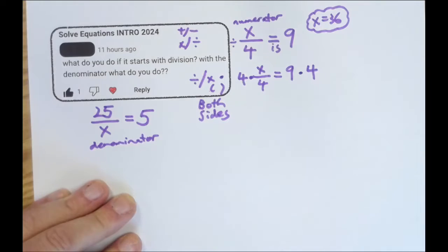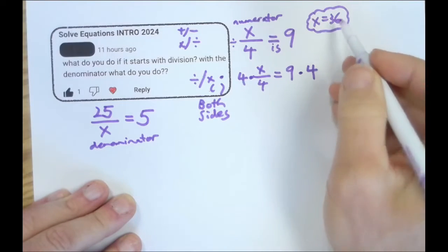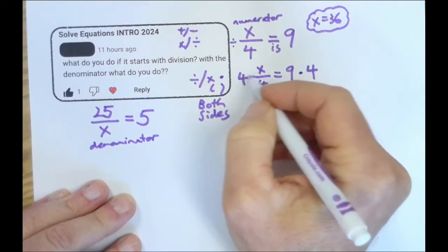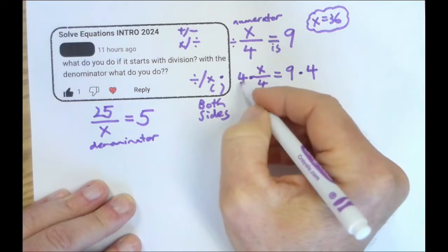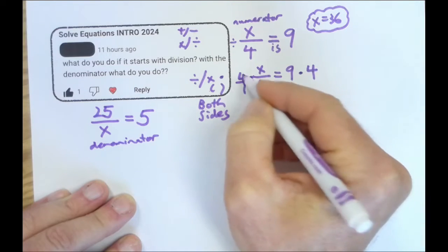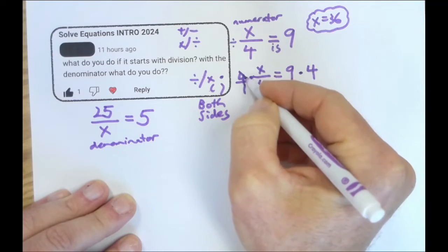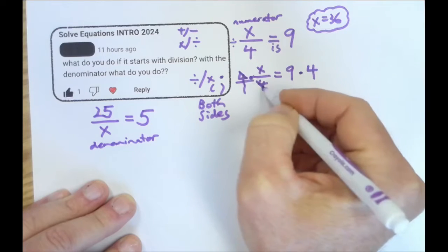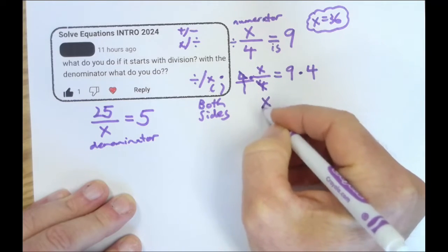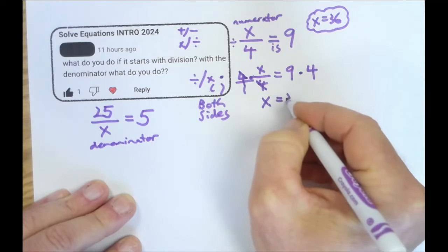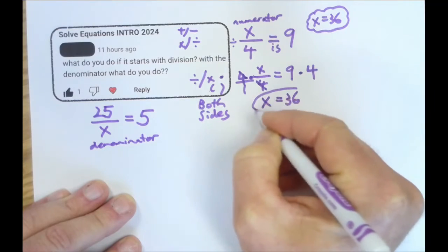So, we're going to multiply both sides by 4. You see what's going on? You see what's happening? We already know it's 36. And the reason we multiply by 4 is that turns that denominator into 4 over 4. And now we're left with x over 1, which means 1x. And that solves that one.